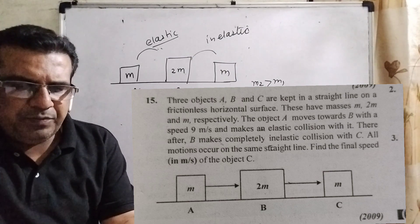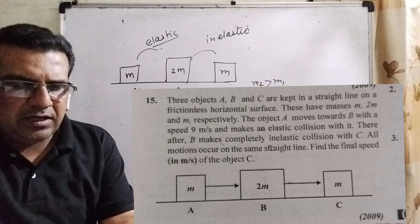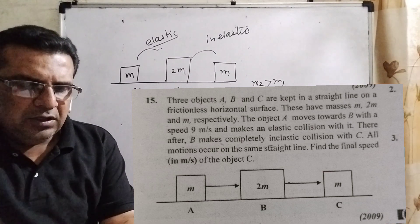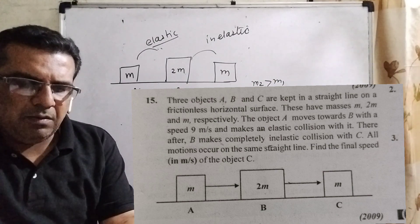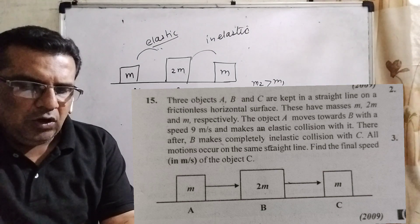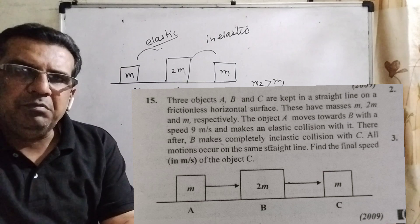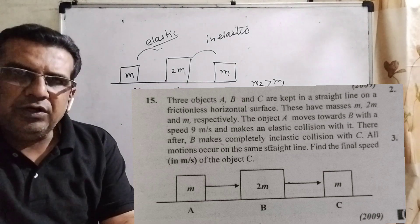Respectively, the object A moves towards B with a speed 9 meter per second and makes an elastic collision with it. Thereafter, B makes completely inelastic collision with C. All motions occur on the same straight line. Find the final speed in meter per second of the object C.